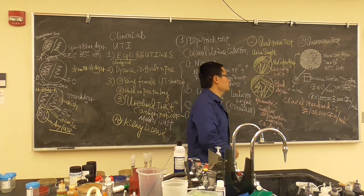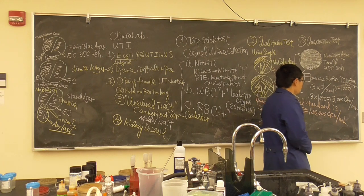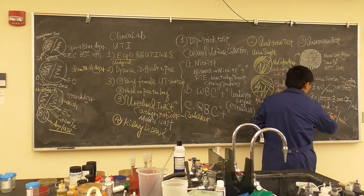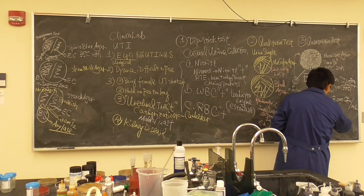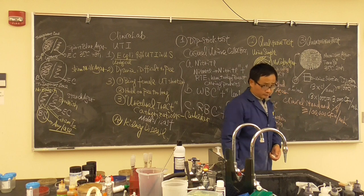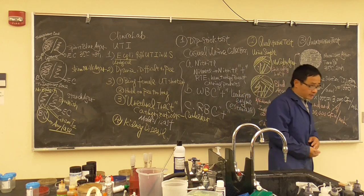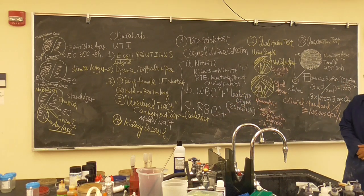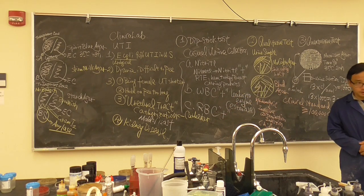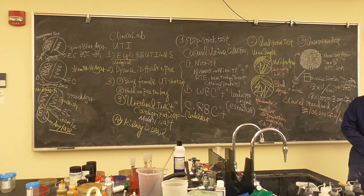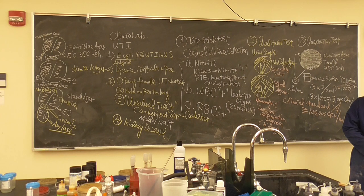This person is not diagnosed with UTI because their count is below 100,000 CFU per mL. However, they would be recommended to see a doctor every three to six months for a routine test to monitor whether an infection develops in the body.